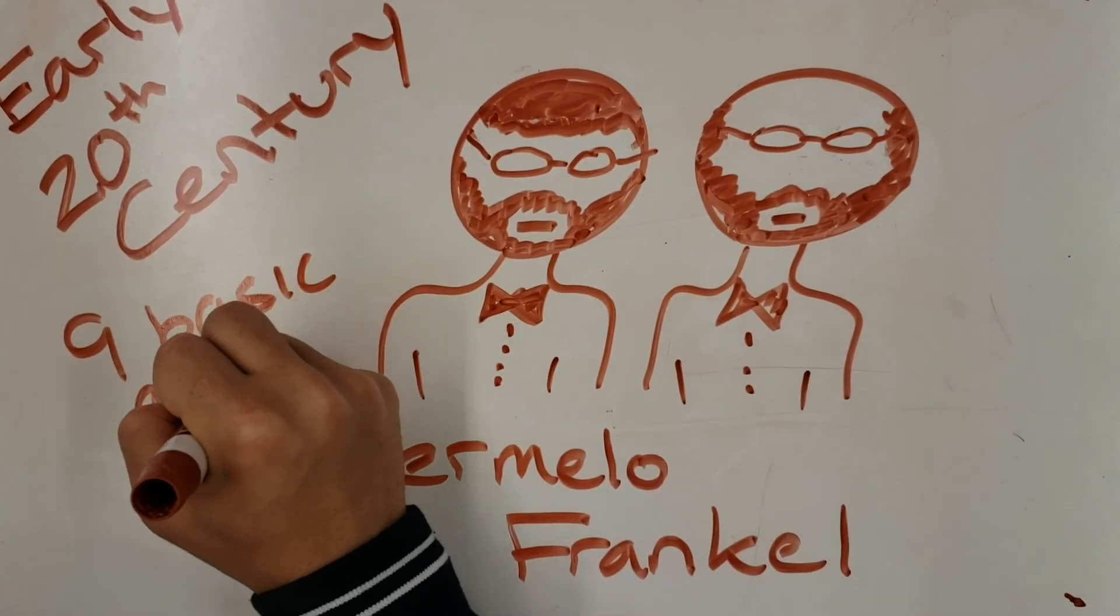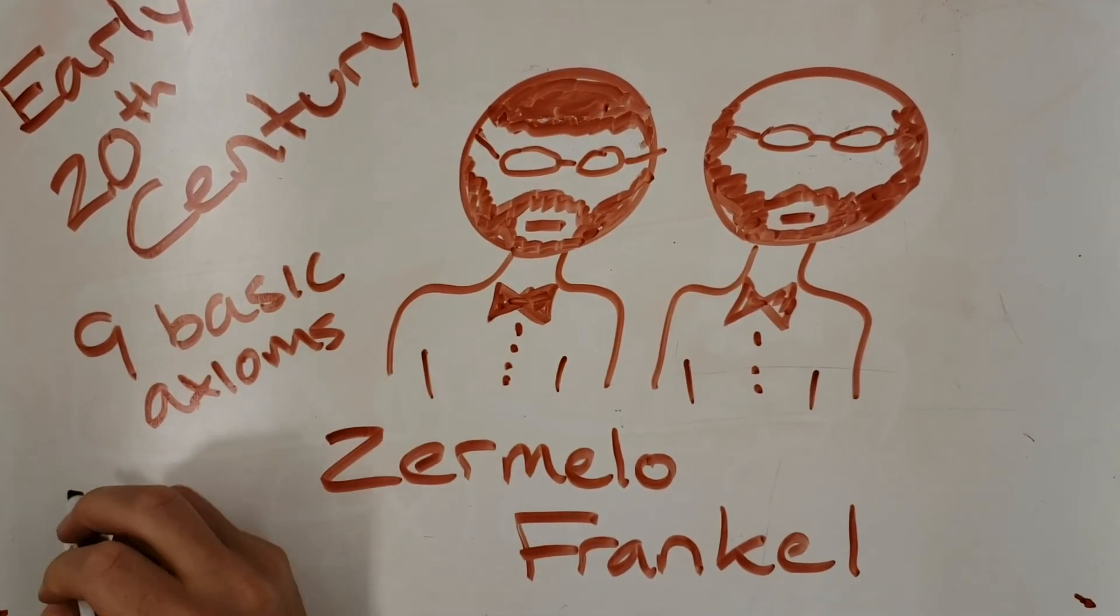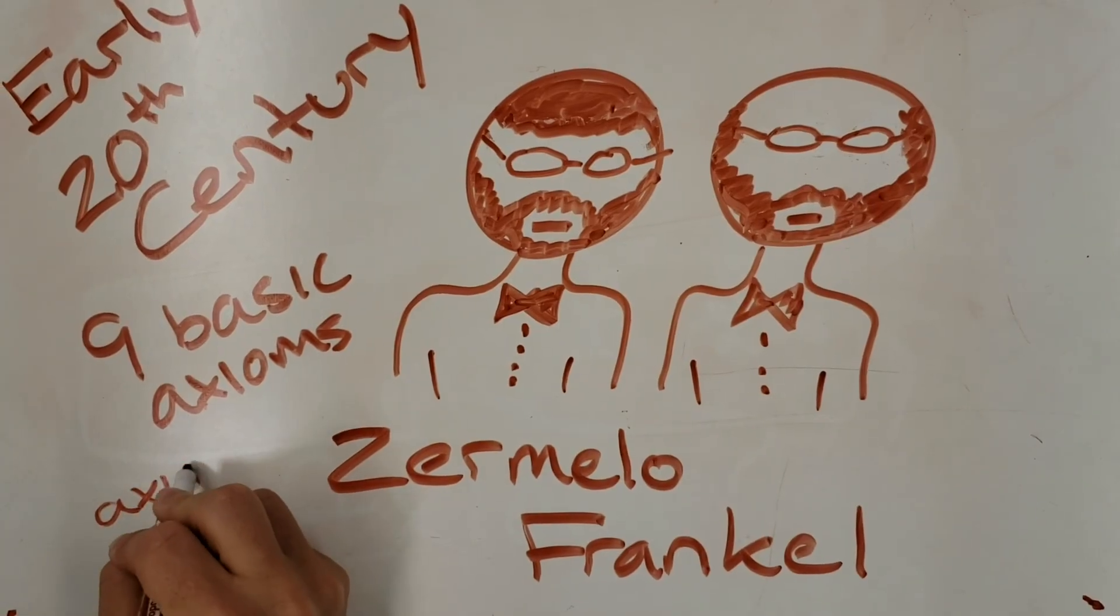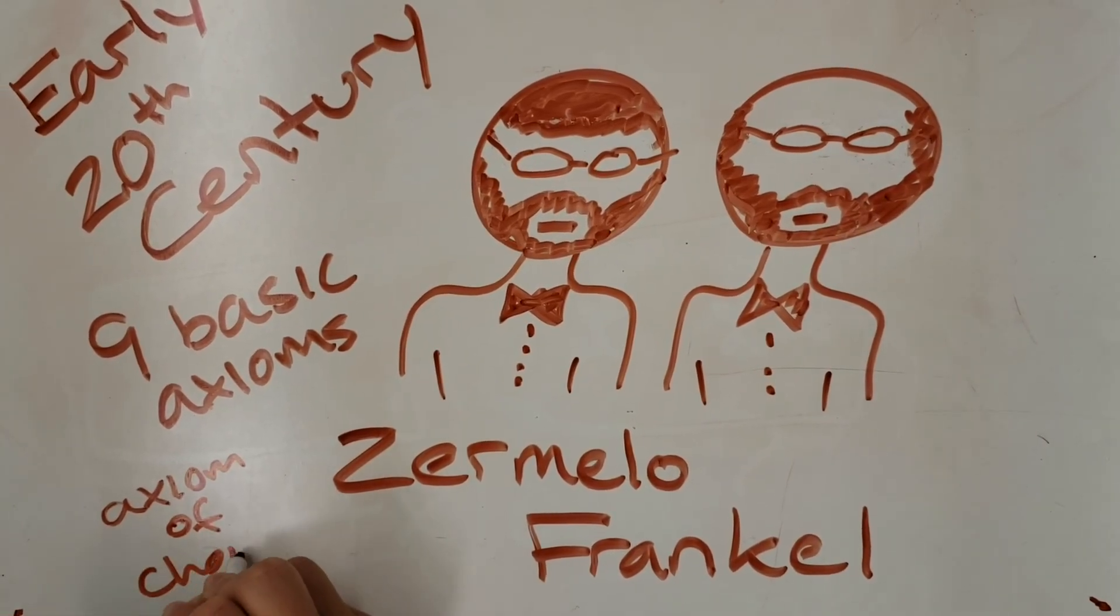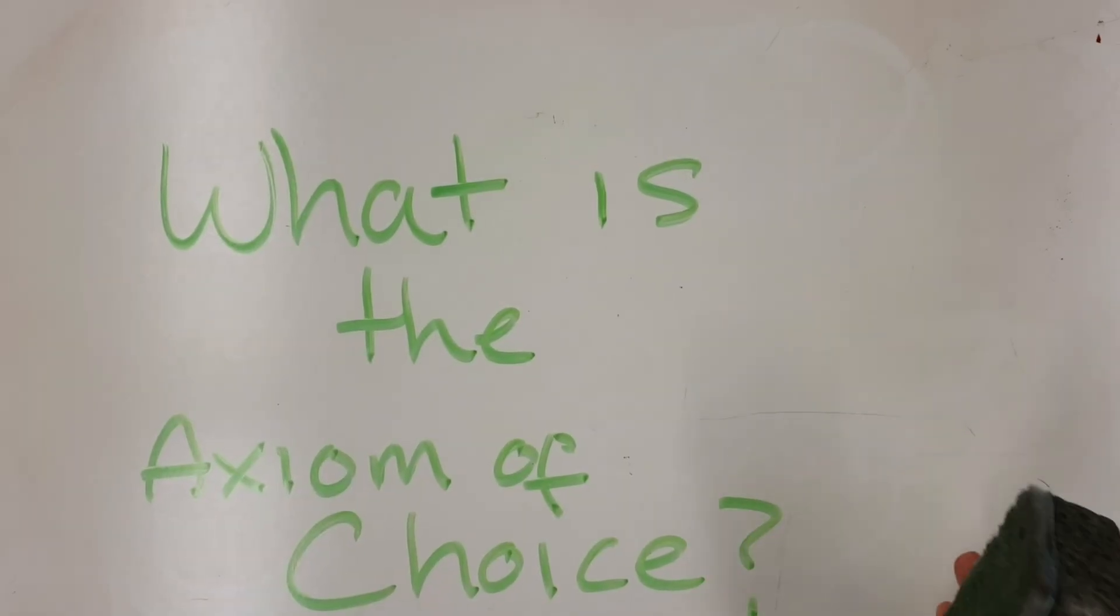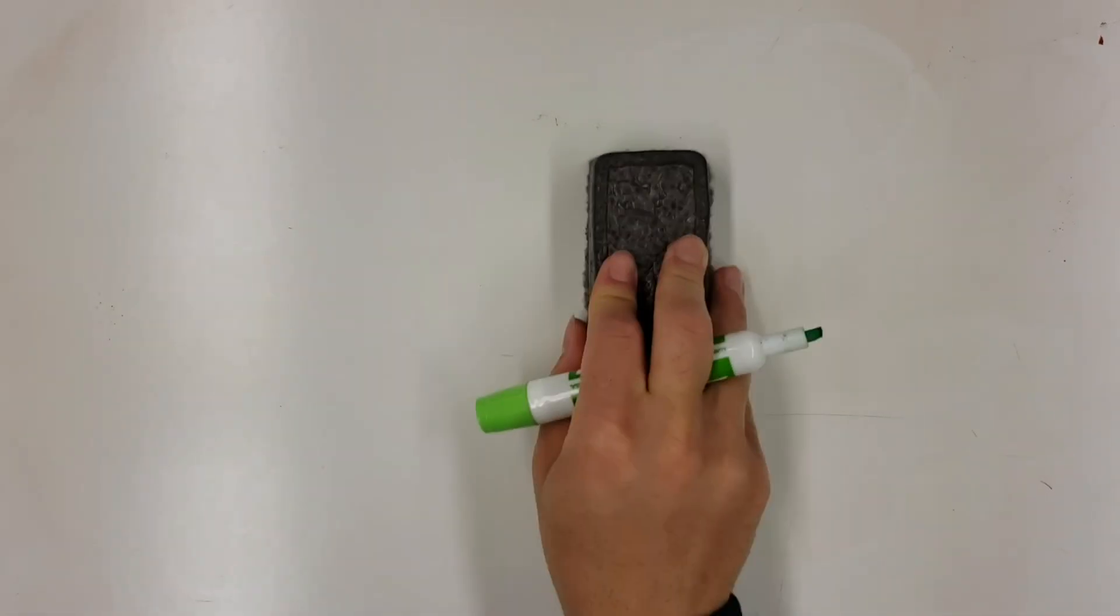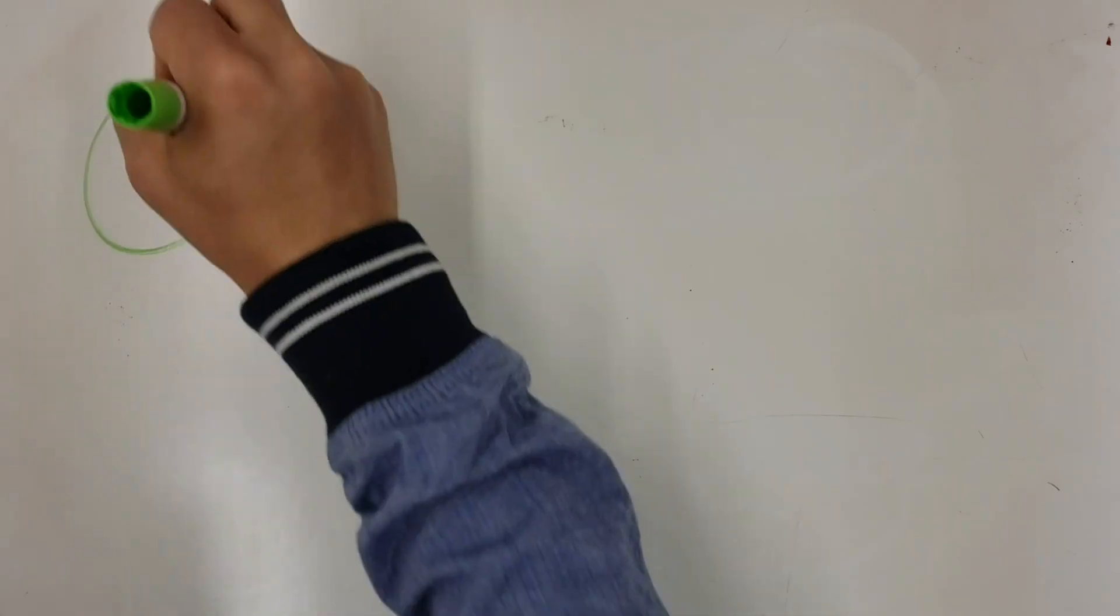The axiom of choice is in addition to the nine basic axioms. This axiom is historically controversial, and we'll soon see why. What is the axiom of choice? The axiom of choice states that given an infinite collection of non-empty sets, a new set can be formed that contains elements from each set.